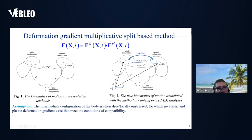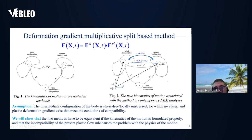The theory assumes that the intermediate configuration of the body is locally stressed, for which no elastic and plastic deformation gradient exists that meets the conditions of compatibility. We will show that if the kinematics of motion is properly considered, then the two methods have to be equivalent, and that the plastic flow rule causes the problem with the physics of the motion.